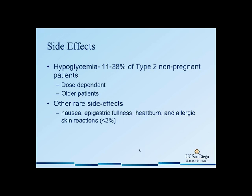Hypoglycemia is a risk that can occur with the use of glyburide. It occurs in about 11% to 38% of type 2 diabetes patients. In general, I see it in about 20% of our pregnant patients. It's obviously dose-dependent — the higher the dose, the higher the risk of hypoglycemia — and it can be seen in older patients as well.